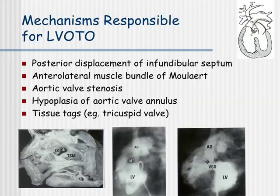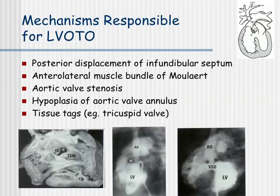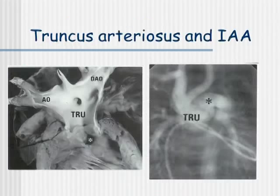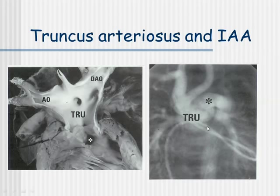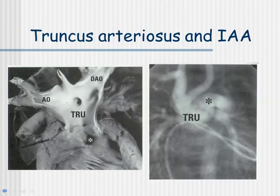Anterolateral muscle bundle, mitral-aortic valve stenosis, and hypoplasia of the aortic valve annulus may also cause left ventricular outflow tract obstruction. Tissue tags from the tricuspid valve may cause obstruction as well. Here's an autopsy specimen of a patient with truncus arteriosus overriding the ventricular septum, giving rise to the ascending aorta and via the ductus to the descending aorta and the pulmonary arteries. The same condition is shown in angiography: truncus arteriosus, ascending aorta, type B interruption after the left carotid, and ductus leading to the descending aorta.